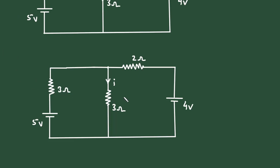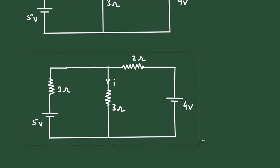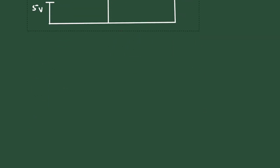Now here we can see we can convert this voltage source into its equivalent current source. Also, we can convert this other voltage source into its equivalent current source. Now let's convert these two voltage sources into their equivalent current sources.